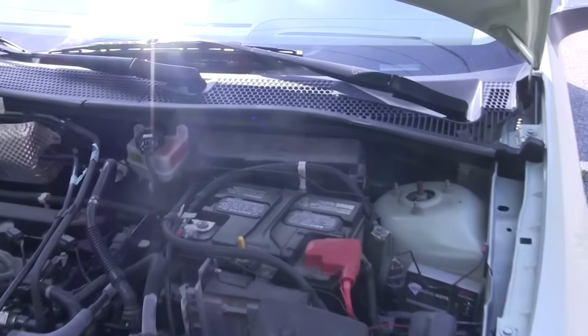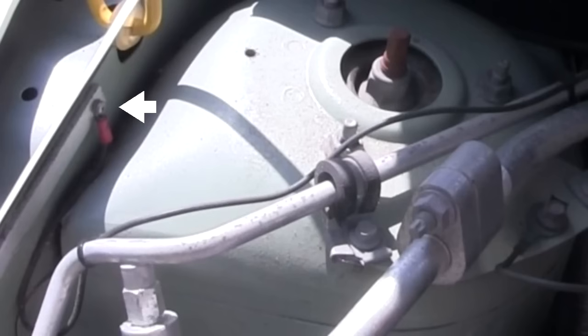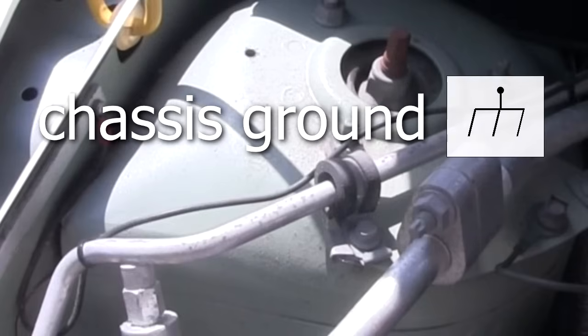For example, in a car, the negative of the battery and the negative of a lot of the electrical components are connected to the car's chassis. That's called the chassis ground and has this symbol.